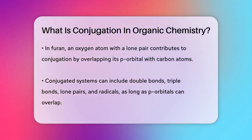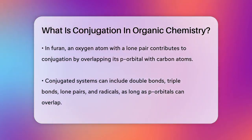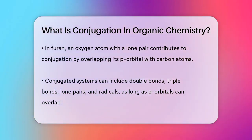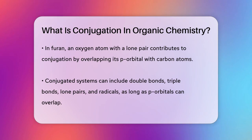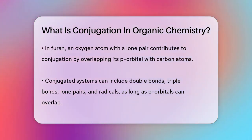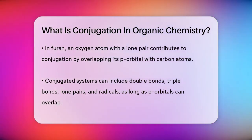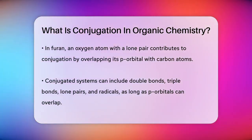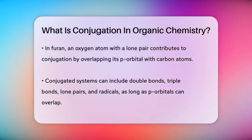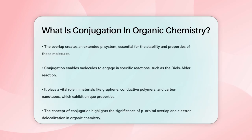Conjugated systems can include double bonds, triple bonds, or even lone pairs and radicals. The key is that each atom in the chain has an available p orbital that can overlap with the next one. This overlap forms an extended pi system, which is essential for the stability and unique properties of these molecules.